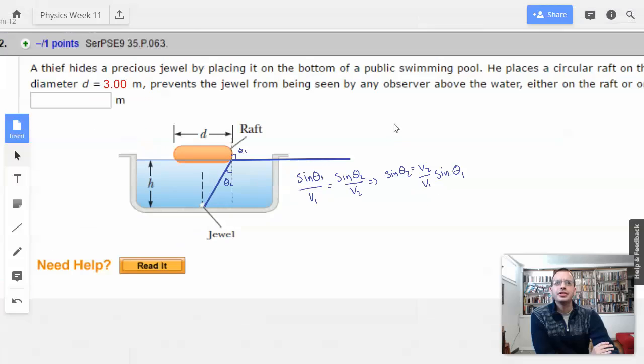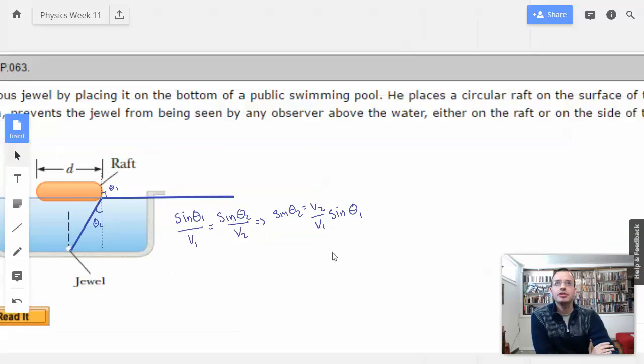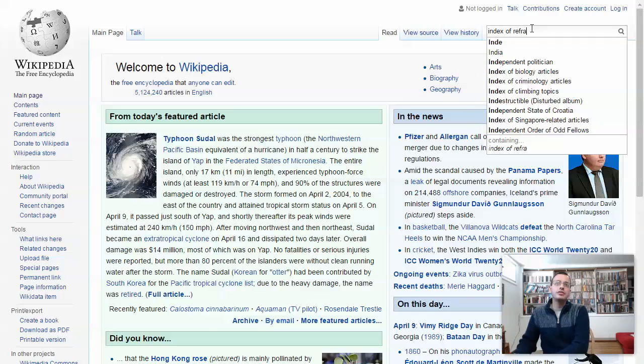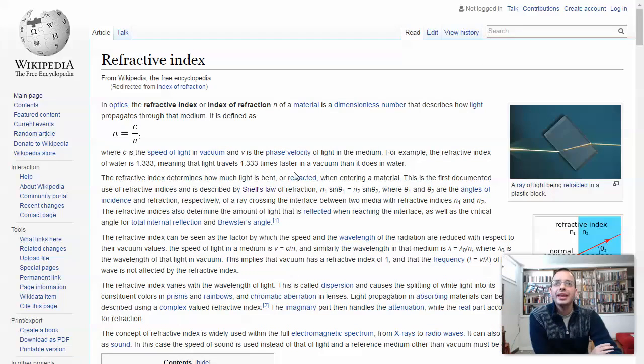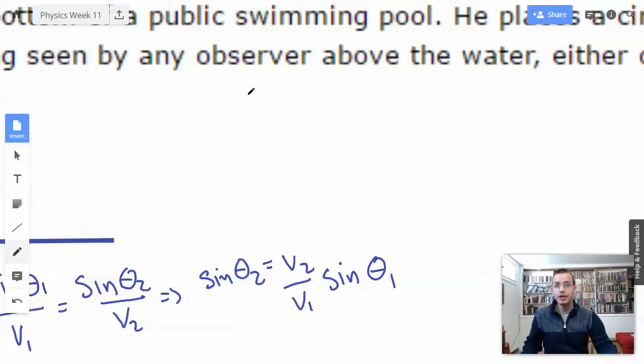Now, they don't tell us the index of refraction for water, do they? Okay. So I'm going to make some assumptions here in life. And by me, I mean Wikipedia. Index of refraction. For example, the refractive index of water is 1.33. I'm going to round that off to 4 thirds. So N water equals 4 thirds, which implies the velocity of light in water, I'm going to call this V2, is going to be 3 fourths C.